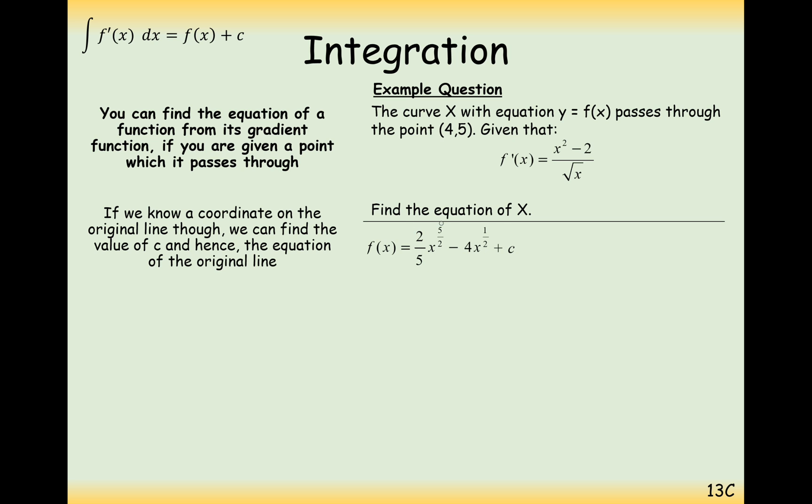Now our original function is going to look something like this here. Two-fifths x to the power of 5 over 2 minus 4x to the half plus c. And now what we need to do is find c by plugging in the 4 and 5 coordinate. So substitute those in. And luckily the square root of 4 is a whole number, so that will give us 2. So here we're going to get c is equal to 0.2 or one-fifth.